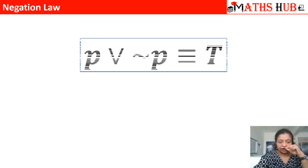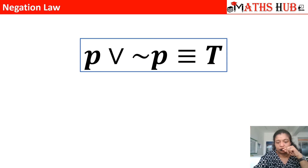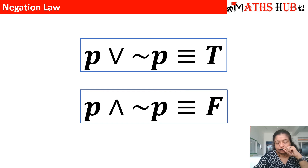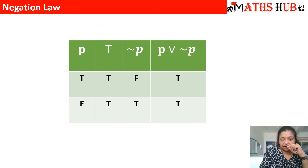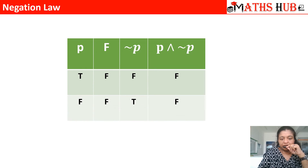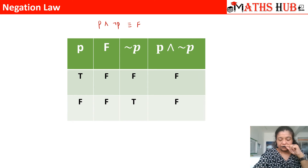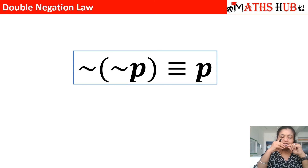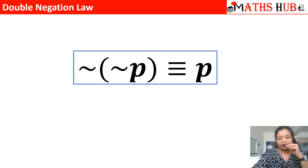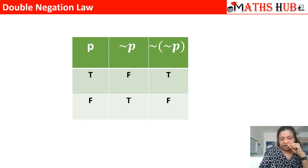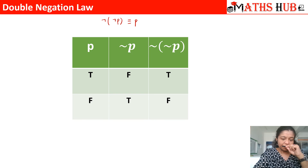The negation law says P OR negation P is always a true statement, and P AND negation P is always a false statement. These can also be proved with truth tables. Finally, the double negation law says negation of negation P is always equivalent to P. This too can be proved with a truth table. These are all the laws you should remember to solve the questions.